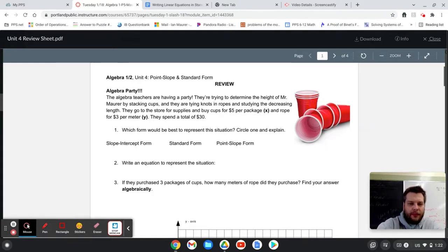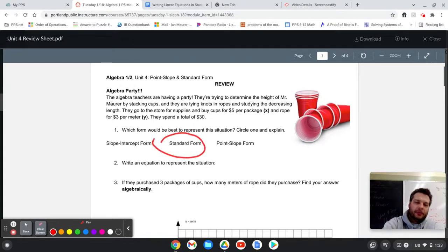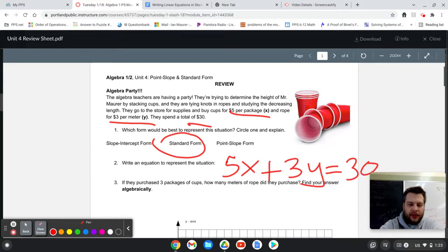So when I'm looking at this first problem here, what I'm noticing is that there are two different things combining to make a total. And so that would be a standard form situation. The two things that are combining are cups and rope. It looks like the cup is x and the rope is y, given to us right there in the problem. And there's a total of $30. So I can write the equation, basically just taking the sentence and converting it into math symbols. $5 per rope, $3 per cup makes $30. 5x plus 3y equals 30.